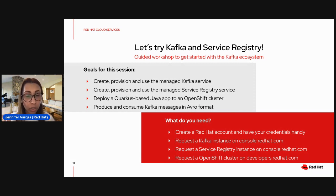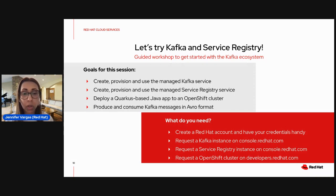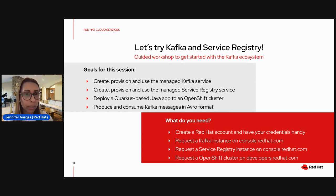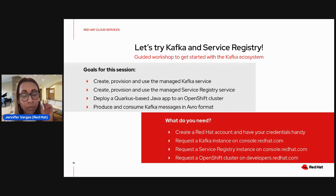Second, you're going to have to request a Kafka instance — if you didn't do it before, we're going to walk you through it. Third, you need to request a service registry instance as well. All of this happens on the same page with wizard-oriented menus — very easy. The last one is to request an OpenShift cluster. You're going to be exposed to a lot of technology today, many systems. We have all the links and steps for you, and even if you get lost you'll be able to read it yourself.